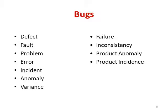A bug has various names in different companies, such as error, issues, problems, defect, mistakes, incident, anomaly, variance, inconsistency, product anomaly, product incidence, and many more.